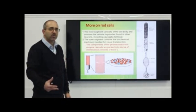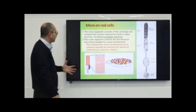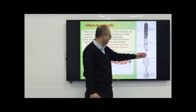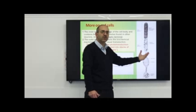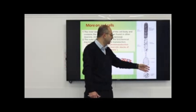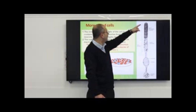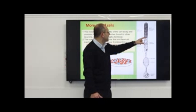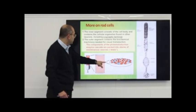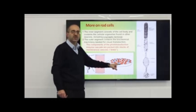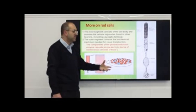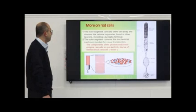Rod cells are more studied than cone cells. Looking at these cells, we have the cell body where the nucleus is, along with mitochondria, lysosomes, and other organelles. In the outer segment, we have these disc-like cassettes — they look like CDs. This is where the molecular components responsible for vision are located.